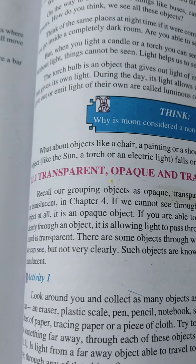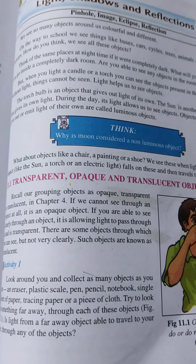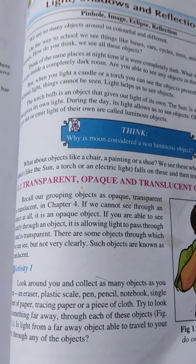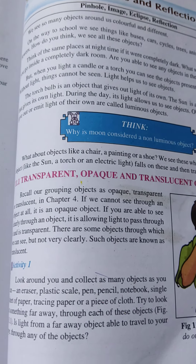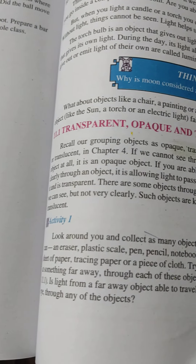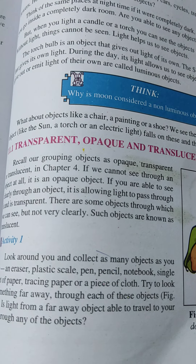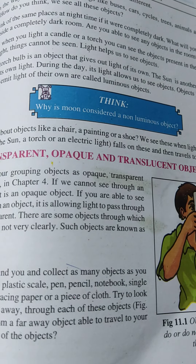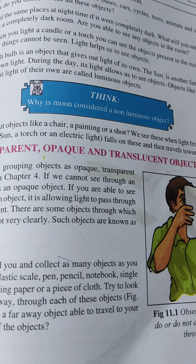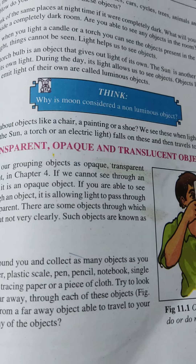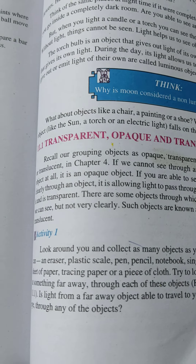What will you see? Suppose you go inside a completely dark room. If you go to this room, you will find it completely dark. Are you able to see objects in a room where it is completely dark?